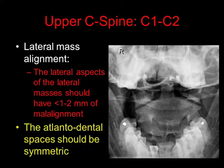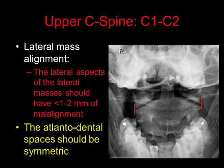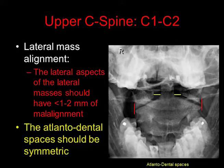On the odontoid view, it's very important to look at the alignment of the lateral masses of C1 and C2. The lateral aspects of the lateral masses should have less than 1 to 2 mm of malalignment. In addition, the atlantodental spaces should be symmetric.